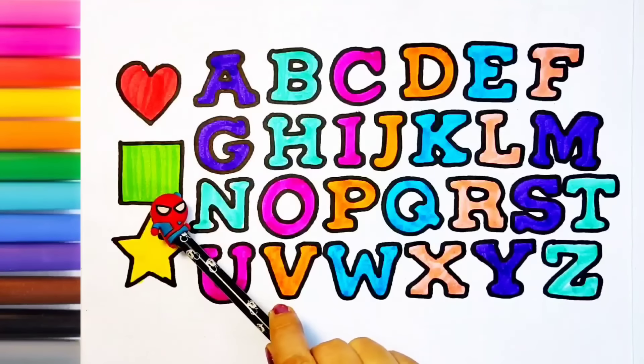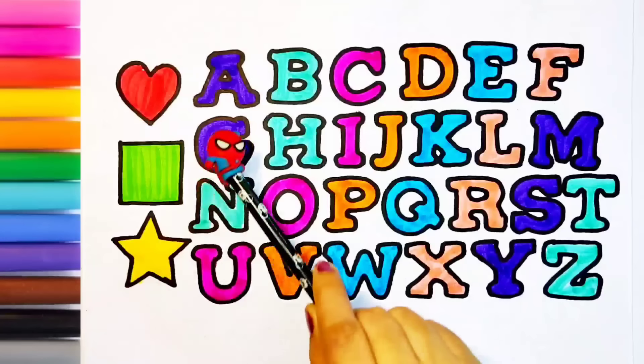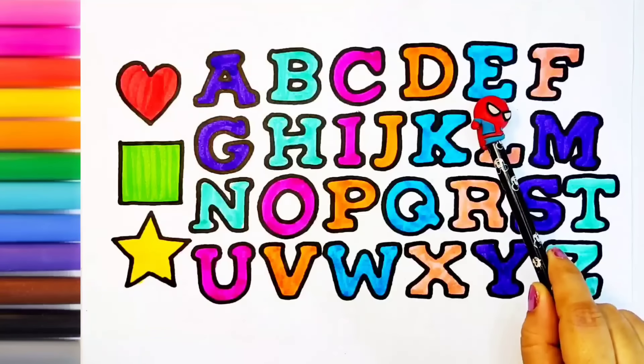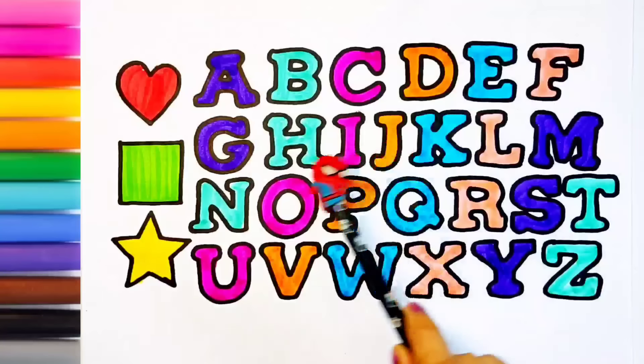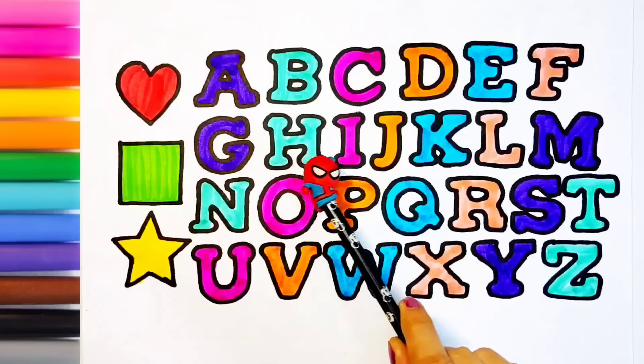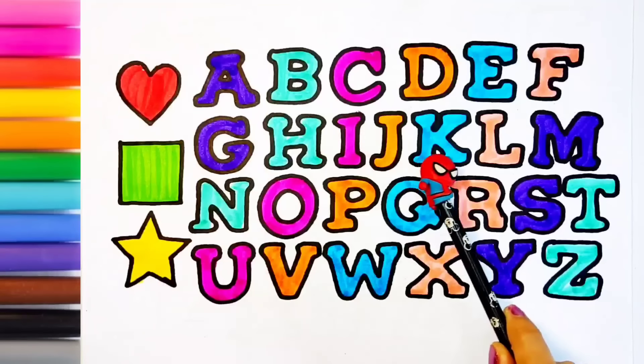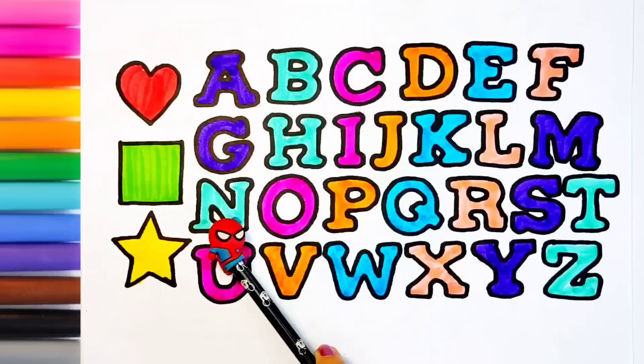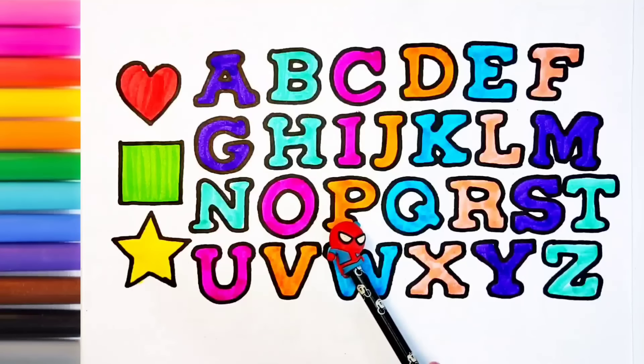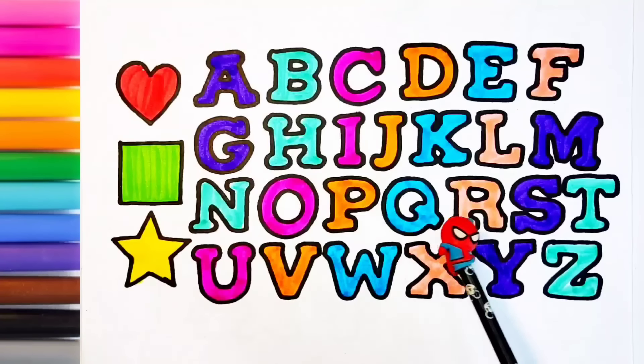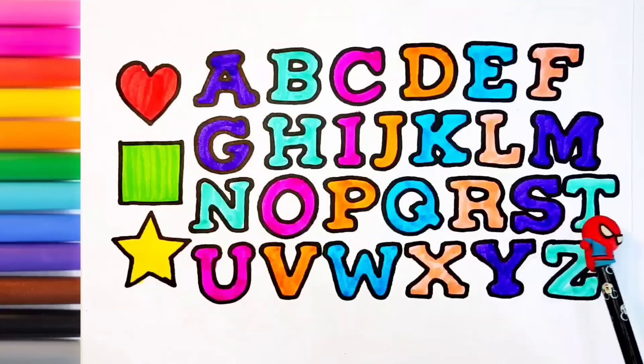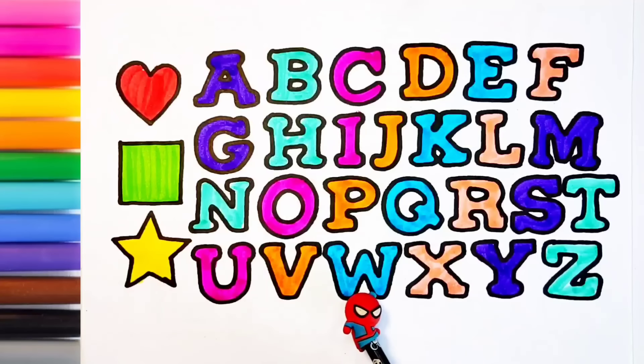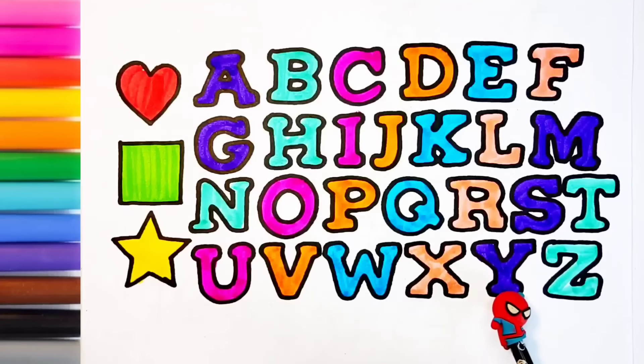Heart, square, star. A, B, C, D, E, F, G, H, I, J, K, L, M, N, O, P, Q, R, S, T, U, V, W, X, Y, Z.